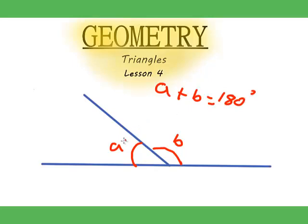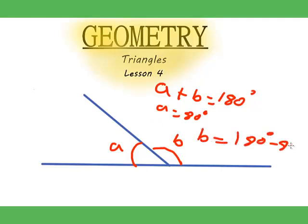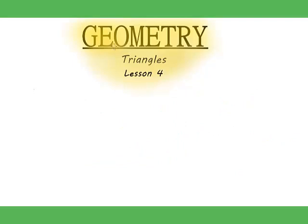So if a equals 80 degrees, then b would equal 180 degrees minus 80 degrees, which is 100 degrees. Okay, so now let's go on to the proof.